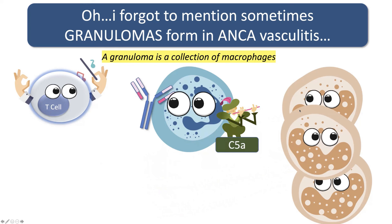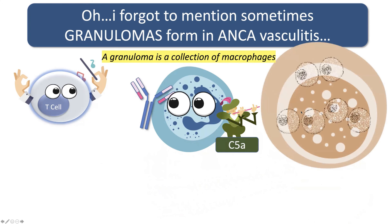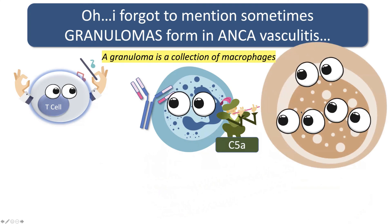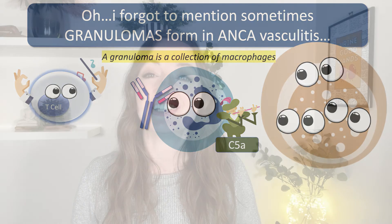And sometimes when there is a granuloma, these macrophages kind of fuse together to become giant cells. So if you're reading and you see giant cells, that's what that means. So that was the pathophysiology of ANCA vasculitis in a nutshell. If you do want to learn more about ANCA vasculitis, definitely check out those resources I mentioned over on the website. And otherwise, stay tuned here on YouTube for some more higher learning. Bye.